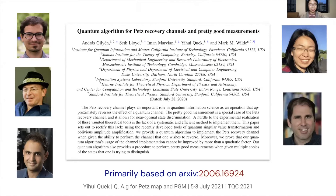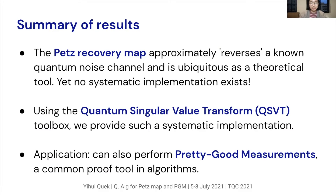Our paper is now on the archive, so you can check it out. To summarize the main points of our results: the PETS recovery map is a well-known tool in theoretical quantum information because it has the property of approximately reversing a known quantum noise channel. Because of this property, it is ubiquitous with applications in fields as diverse as quantum error correction, quantum gravity, and so on. Despite this, no systematic implementation of this map exists on a quantum computer. We fill in this gap using the quantum singular value transform toolbox, providing a systematic implementation of this map. As an application, we can also perform pretty good measurements, which are also a common proof tool.